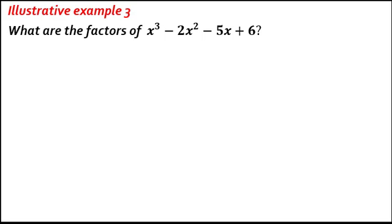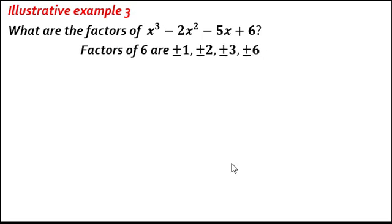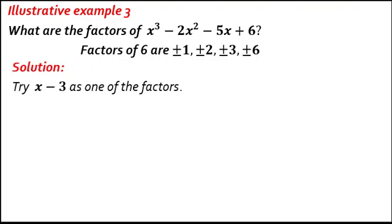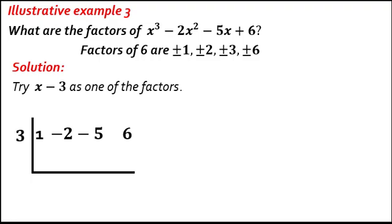Get the possible factors of 6. Choose a factor. Try x minus 3 as one of the factors. Use synthetic division. Write down the numerical coefficients of the given polynomial: 1, negative 2, negative 5, positive 6. Identify the value of c from x minus 3: c equals 3. Bring down the first coefficient, 1.